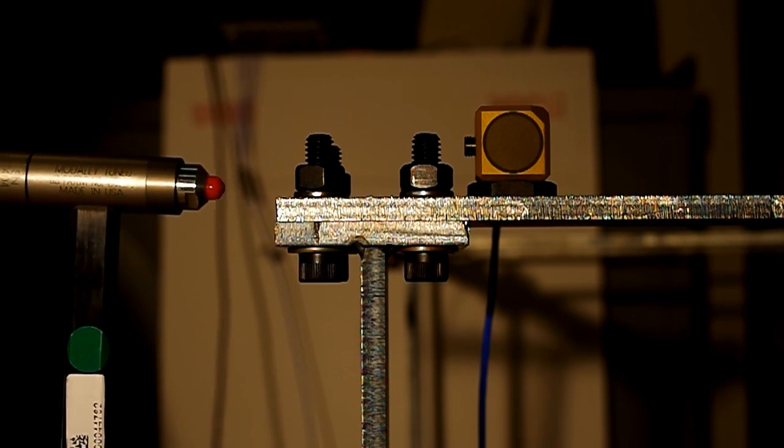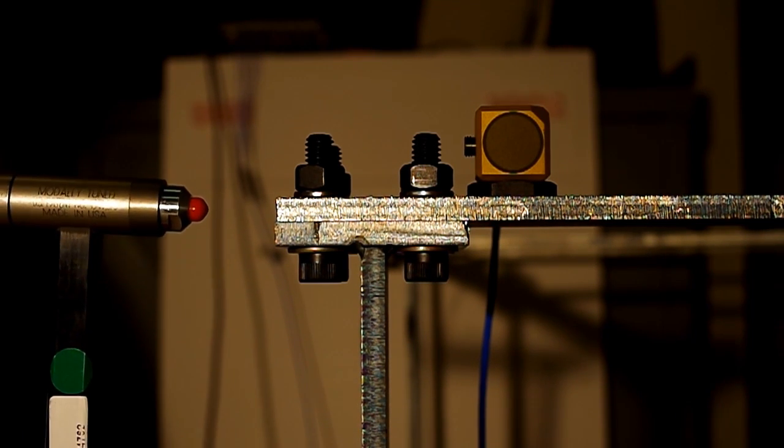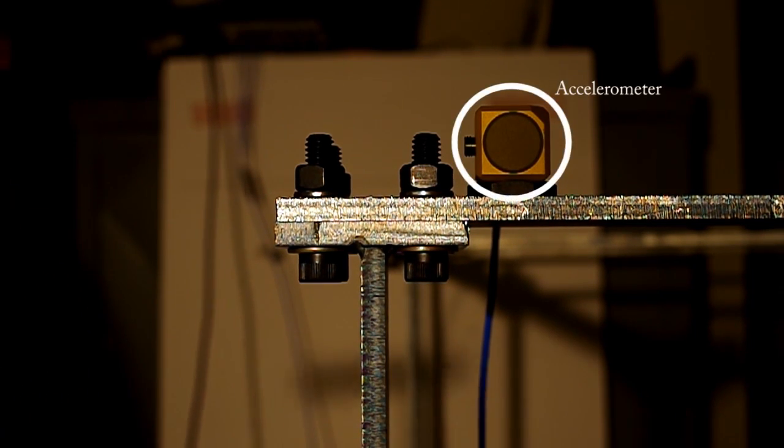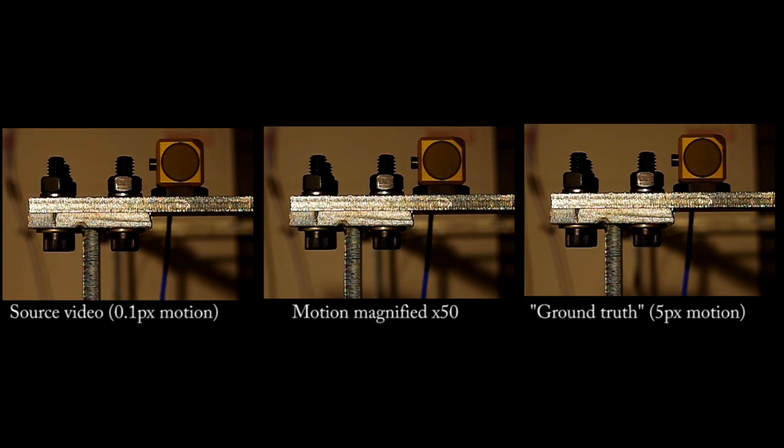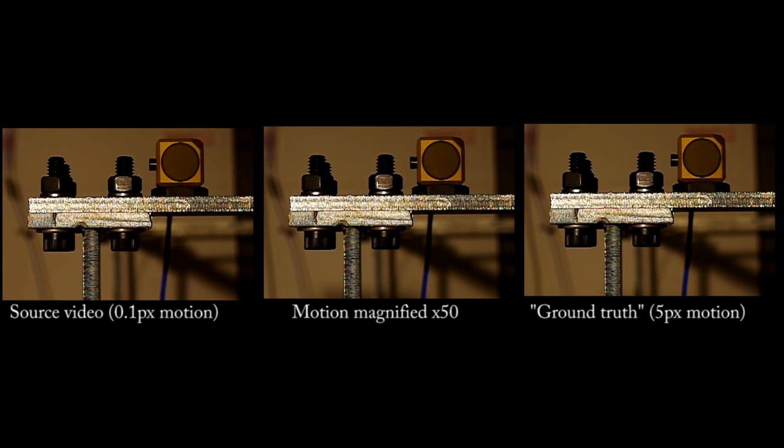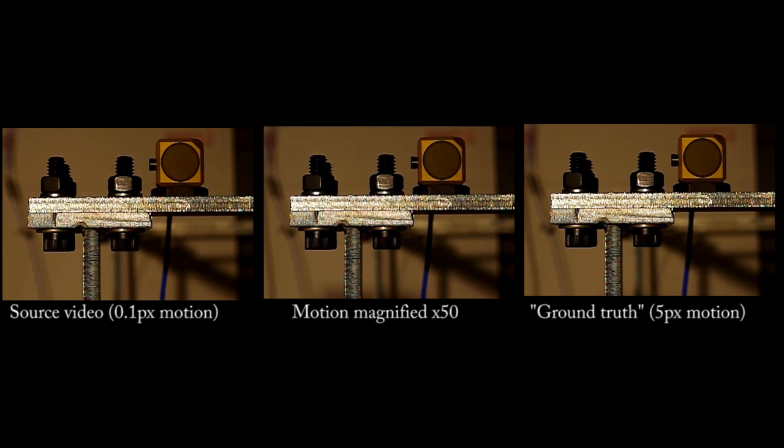In the first experiment, we induce small motions in a metal structure using a hammer and record the motion with an accelerometer. We also record the structure with a video camera. We amplify a sequence with an oscillatory motion of 0.1 pixels by 50 times. The resulting video is similar to a sequence with an oscillatory motion of 5 pixels, which was obtained from a harder hammer hit.